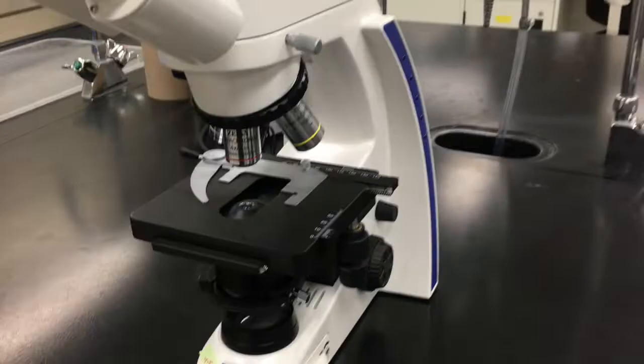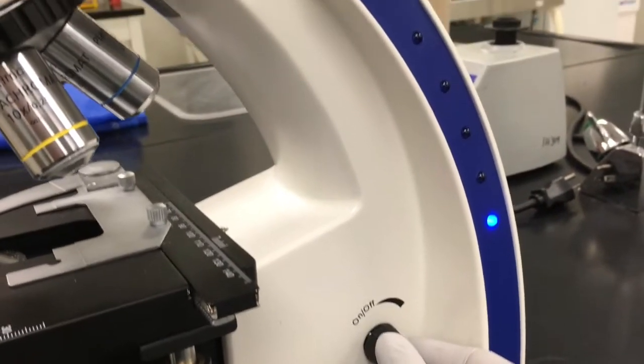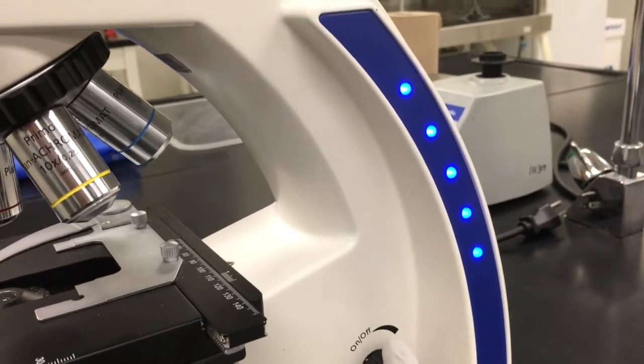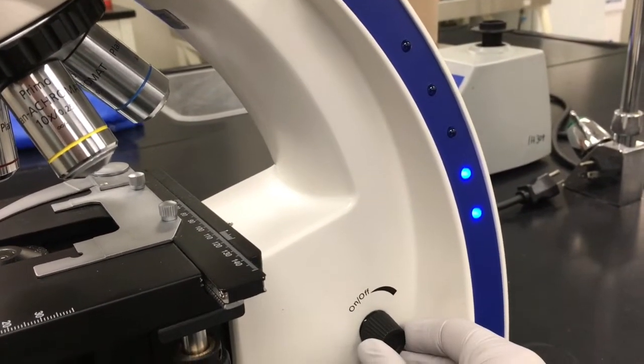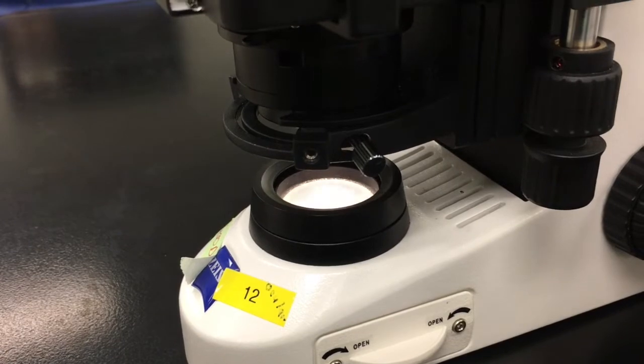Microscopes can be found in the cabinet at your station. Once plugged in, the on-off switch will increase the light intensity of the bulb of the microscope. The higher the magnification you're using, the more light you need. As you begin to find things with your microscope, start with the lowest power and work your way up as needed.